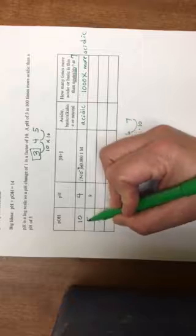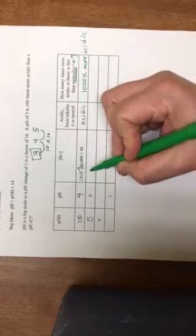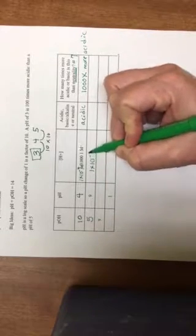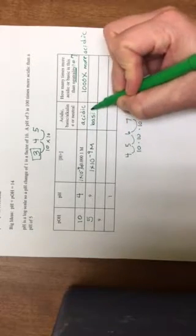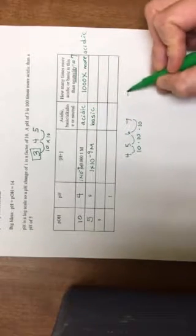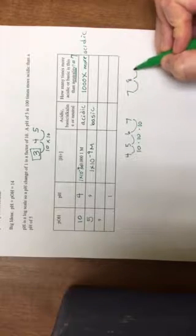The next one here is pH is 9. So that tells me my pOH is 5. My hydrogen ion concentration is 1 times 10 to the minus 9 molarity. pH of 9 is greater than a pH of 7, so this is basic or alkaline. And to go from 7, I go to 8, I go to 9. So 10 times 10 gives me, this is 100 times, in this case it is above 7, so it's 100 times more basic.